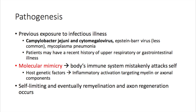The organisms have structures that are similar to structures normally found in the body, and that instigates the immune system to mistakenly attack itself. In this case, inflammation targets the myelin and axonal components. It is a self-limiting illness, and eventually remyelination and axonal regeneration occurs, but in the meantime these patients can present with a number of symptoms.